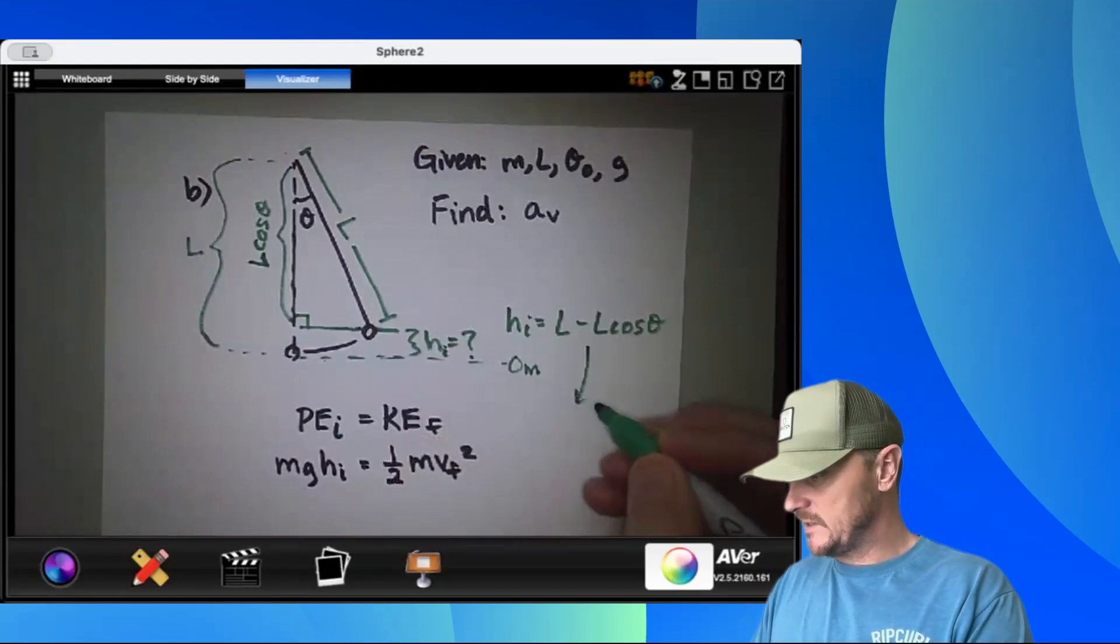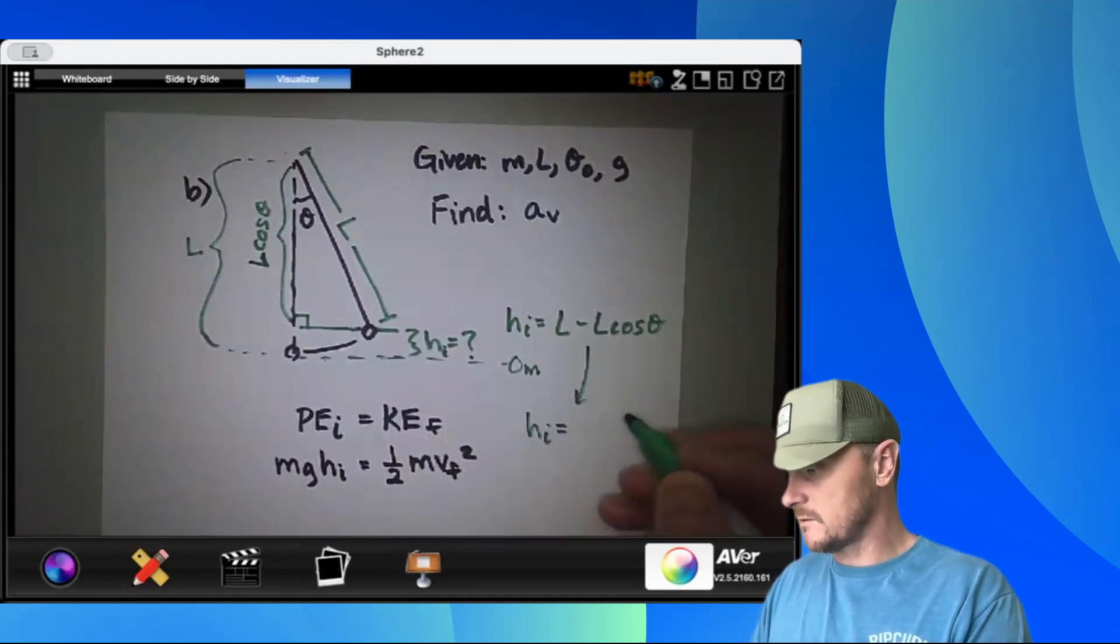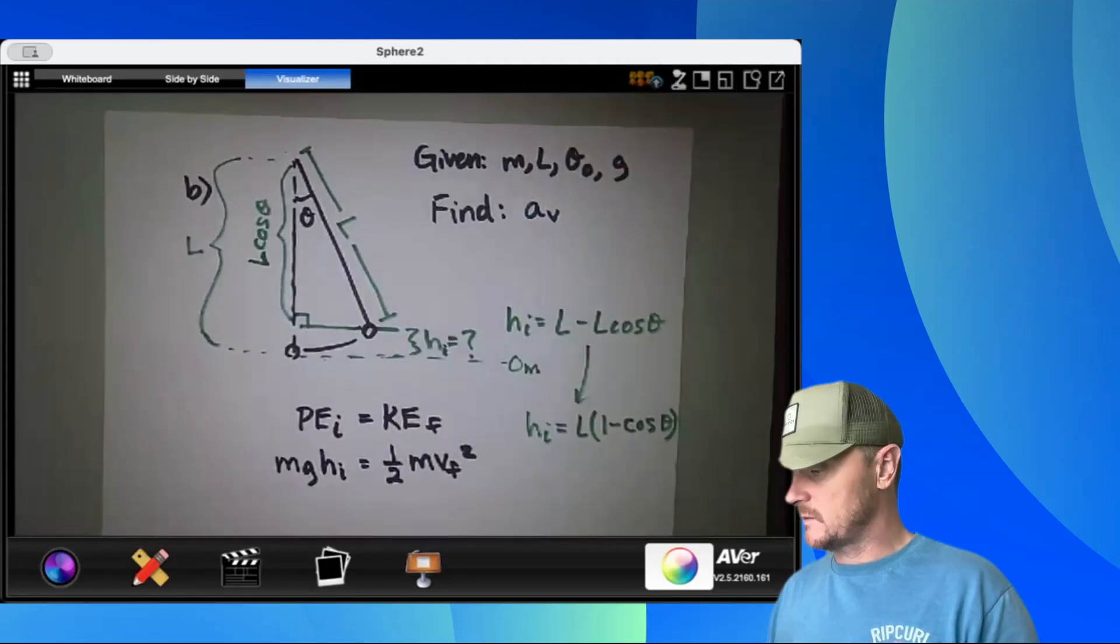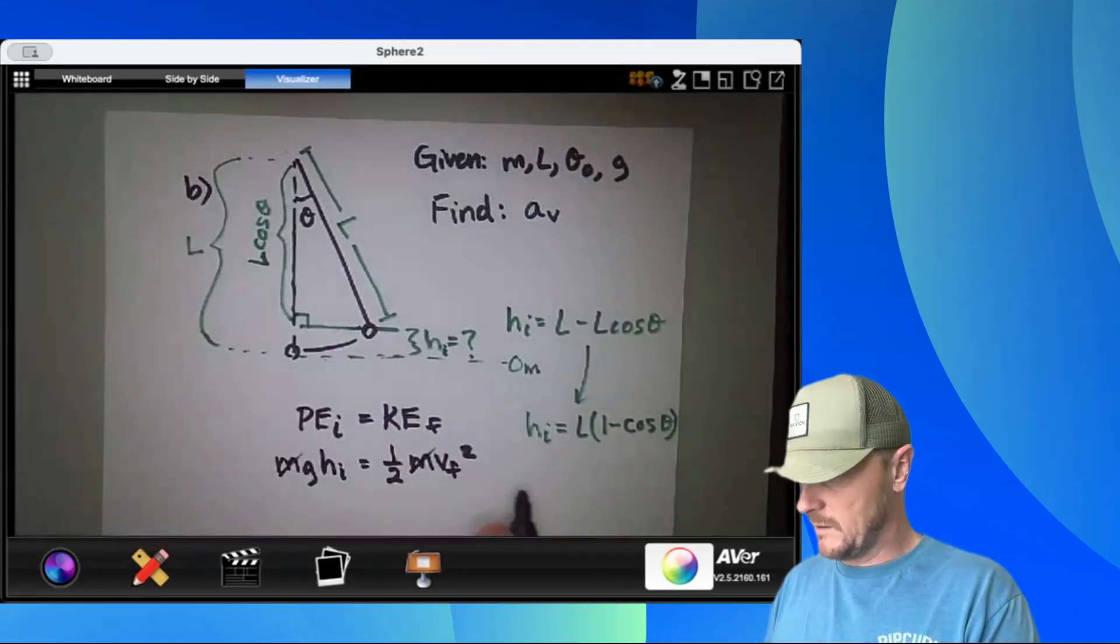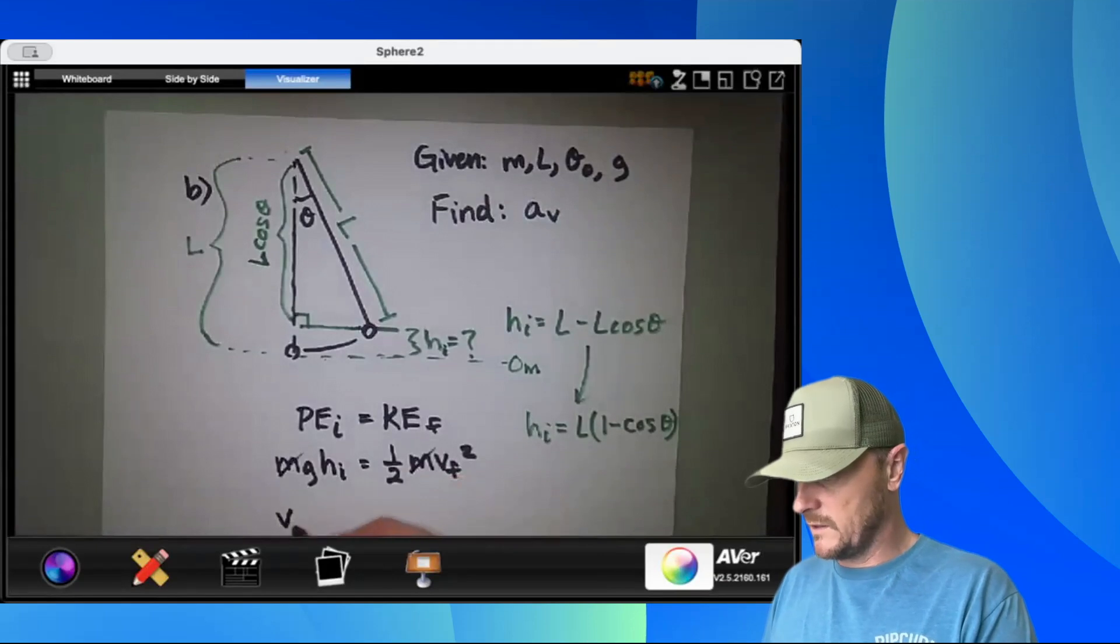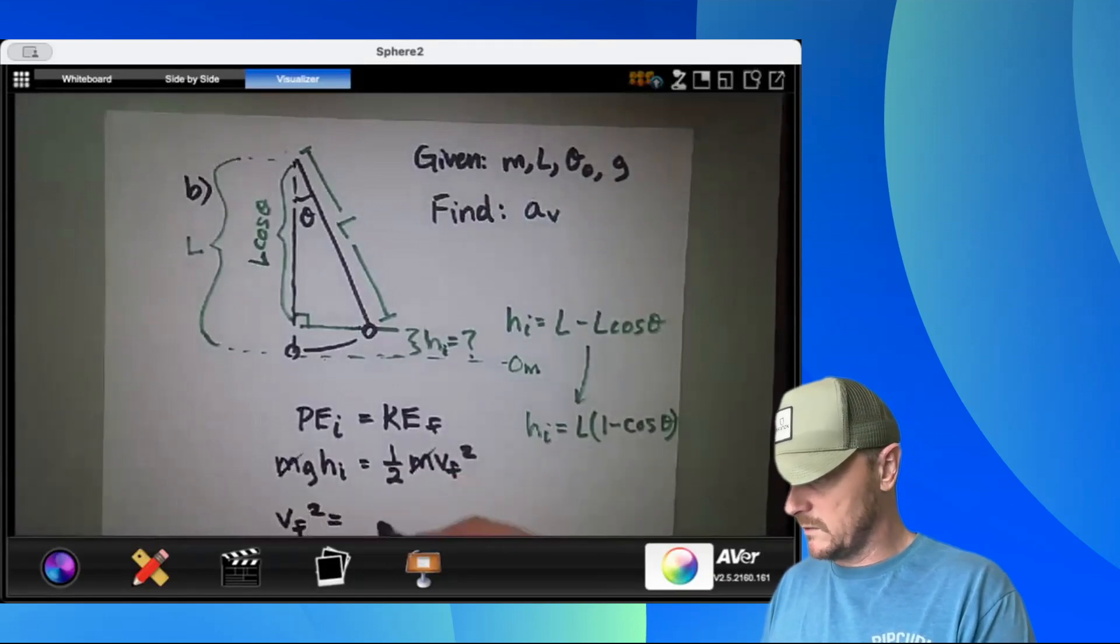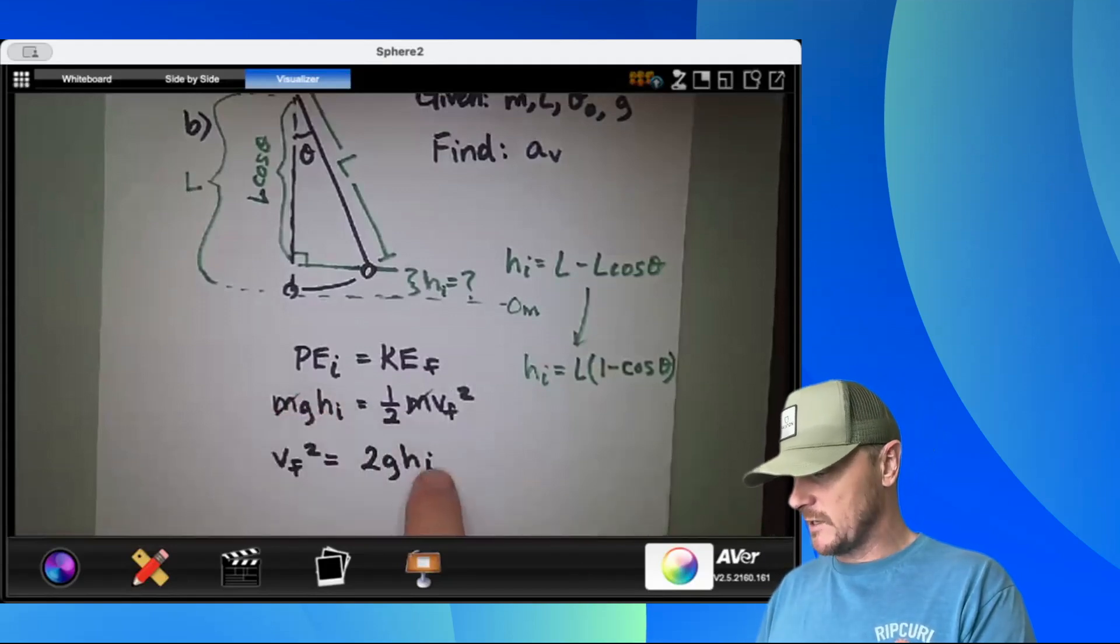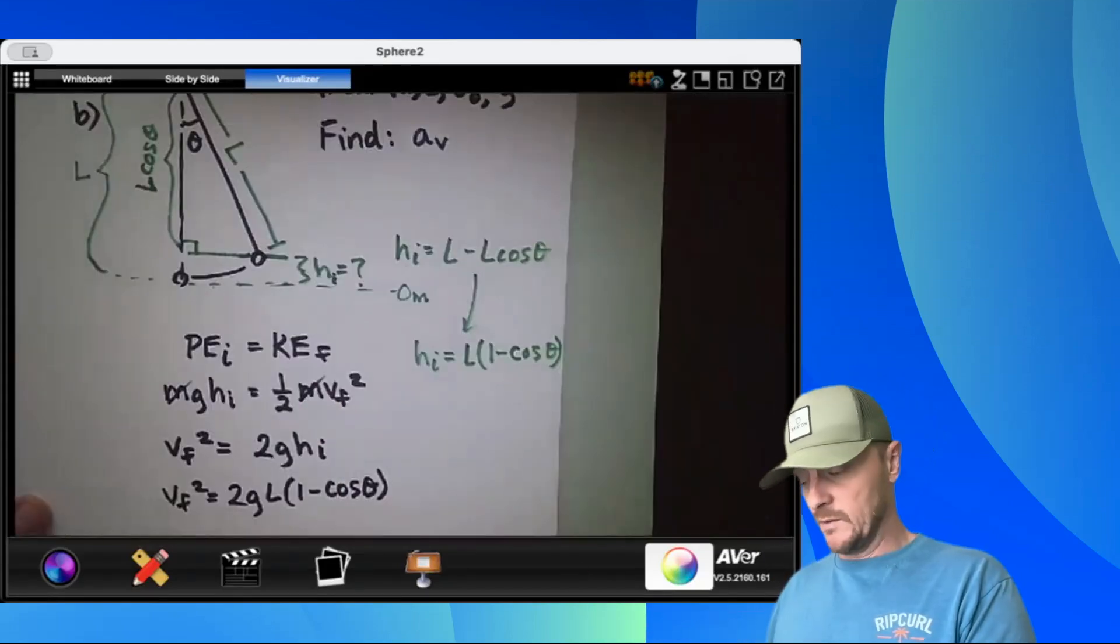Now we can express this a little bit different, and I could say HI equals L times the quantity 1 minus cosine theta. So at this point, let's plug some stuff in. The M's cancel out, and I'm going to solve for VF squared. VF squared would equal 2GHI. I just multiplied 2 to the other side, flip the equation around. Let's plug in HI. Okay, good. We're done with that part.